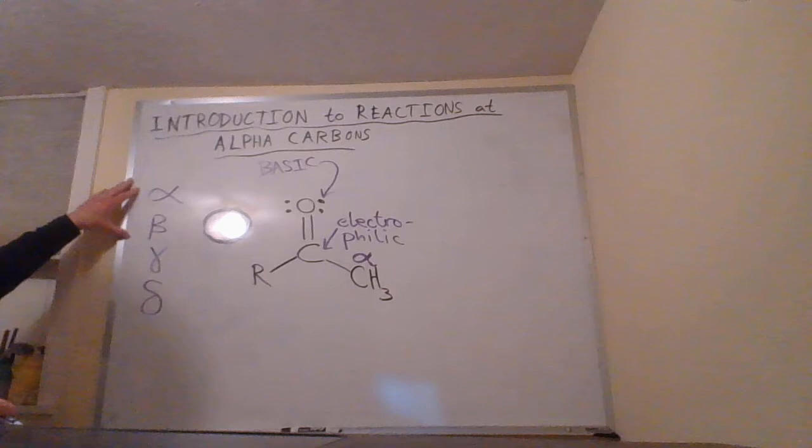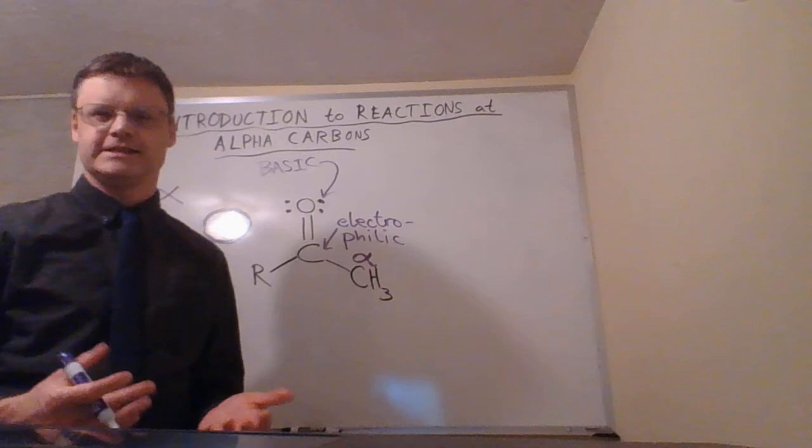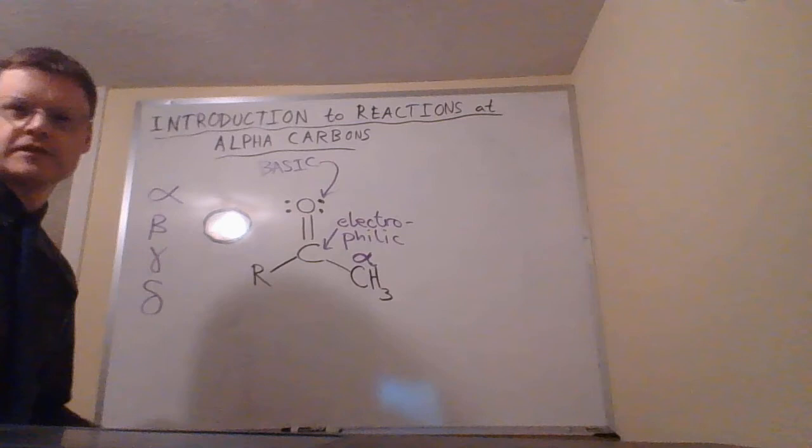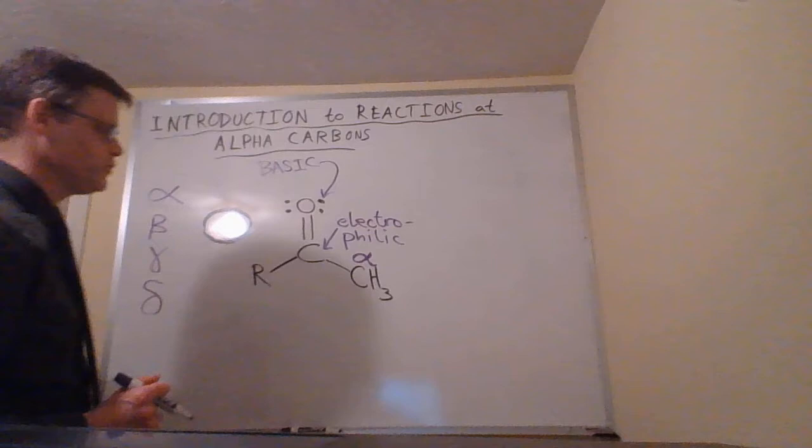We may see compounds such as alpha-beta unsaturated ketones, and that would have a C=C double bond involving the alpha and beta carbons, and we may see something where we talk about the gamma carbon. So just a little terminology there.